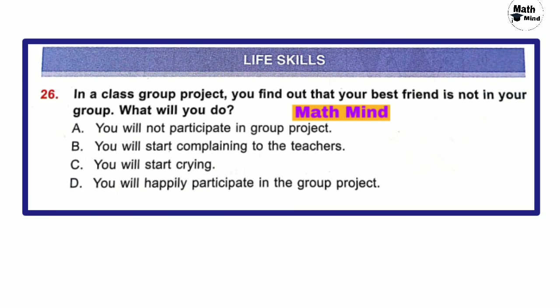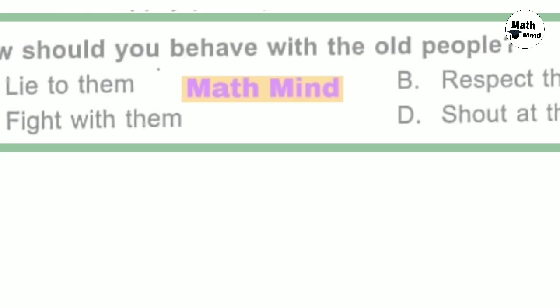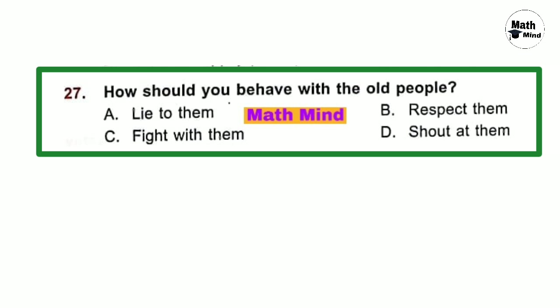Life Skills. Question number 26: In a class group project, you find out that your best friend is not in your group. What will you do? Option D is correct — you will happily participate in the group project. Question number 27: How should you behave with old people? Option B is correct — we should respect old people.